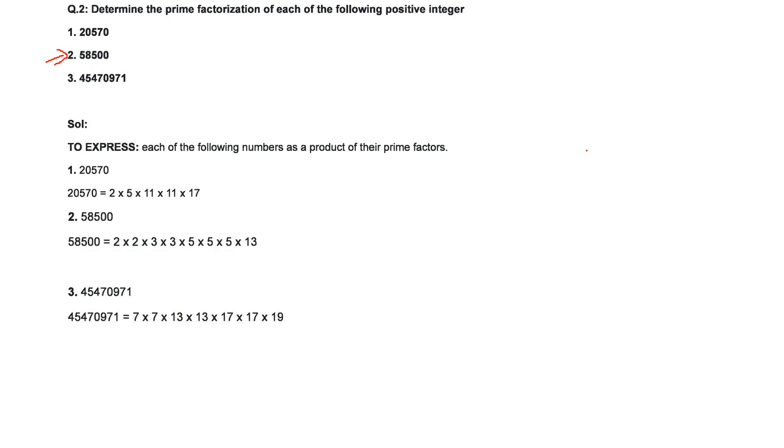So let us take this example. 58500. Let us start with 5. 5, 1 is 5. 5, 1 is 5. Now 35. 3 remains 35. 5, 7 is 35. 0, 0. Let us take 5 again. 5, 2 is 10. Now you get 17. So 5, 3 is 15. 20, 5, 4 is 20. 0.